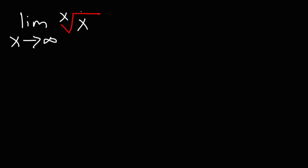What I recommend doing is setting the original expression equal to y. So, we have y is equal to the limit as x goes to infinity of x root of x. Now, the next thing that we could do is change the radical into a fractional exponent. This is x to the first power, and so we can write this as equal to the limit as x goes to infinity of x raised to the 1 over x.